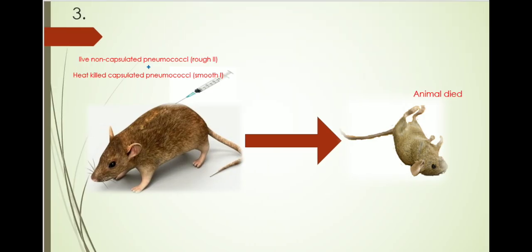In the next experiment, when a mixture of both pneumococci were inoculated in the mouse, the animal died and the live-capsulated type 1 pneumococci were recovered from dead animal, which was used to make recombinant vaccine.